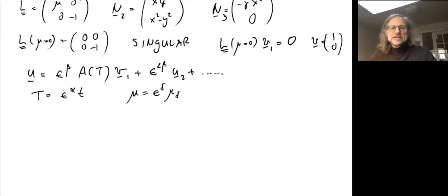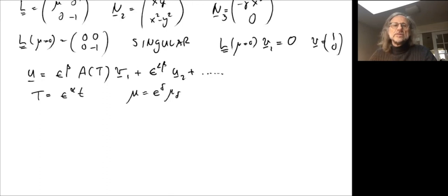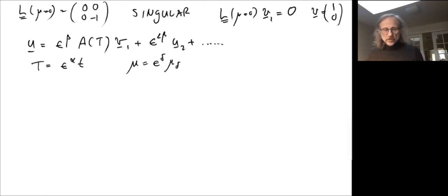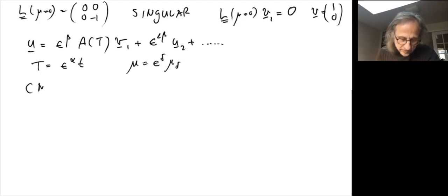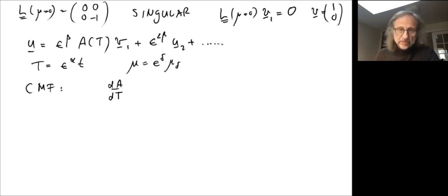The important part is that it's not directly evident from just looking at the original equations, although the information must be in those equations. If you have a way to predict what the equation will be on the center manifold, then you can determine the scaling straightforwardly. On that center manifold, the evolution equation will have three terms: a slow-time derivative of A, a term reflecting the linearization that captures the eigenvalue going to zero at the bifurcation point, and a nonlinear term.